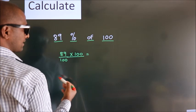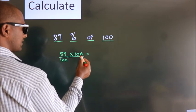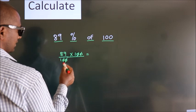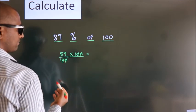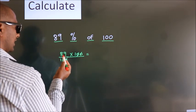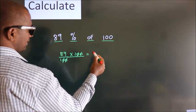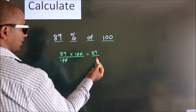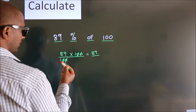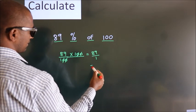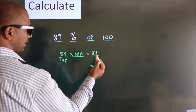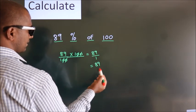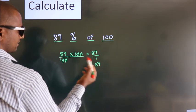Now I cancel this 0 with this, and this 0 with this. We are left with 89 into 1, which is 89. In the denominator, 1. So 89 by 1 is 89. This is our answer.